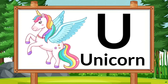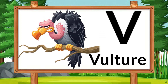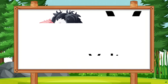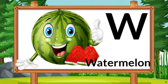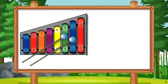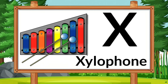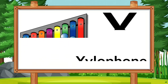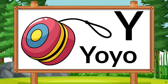U for Unicorn. V for Vulture. W for Watermelon. X for Xylophone. Y for Yoyo.